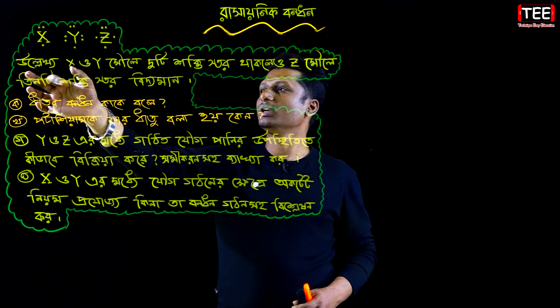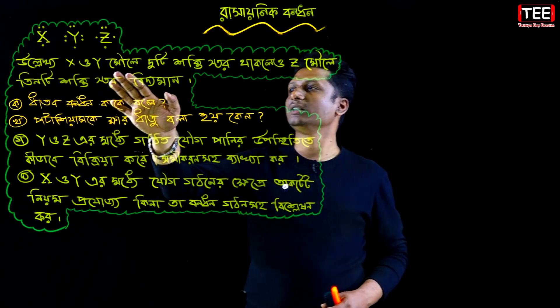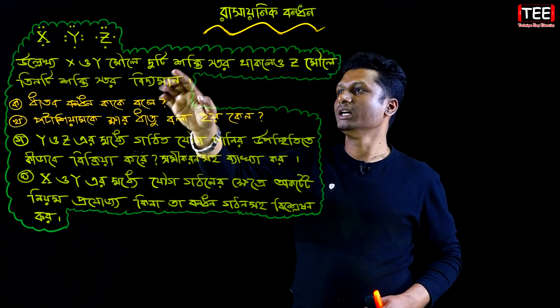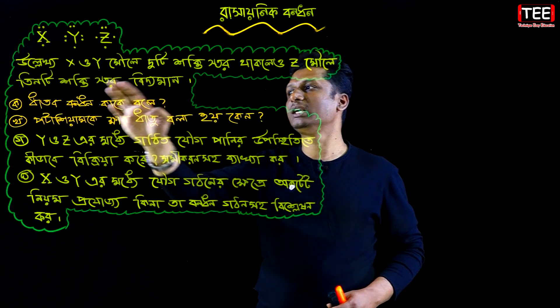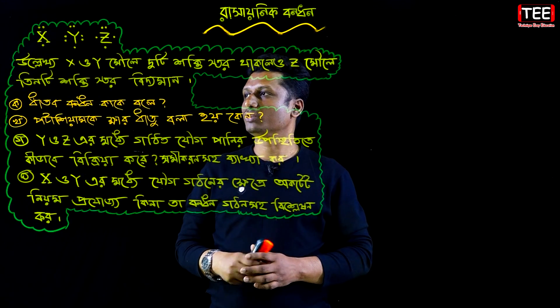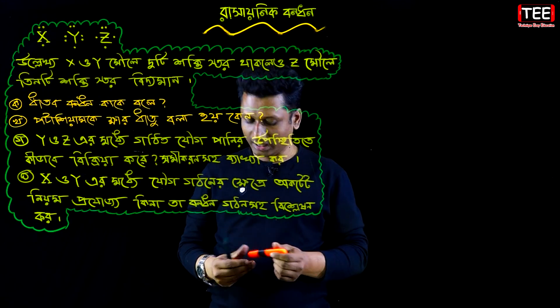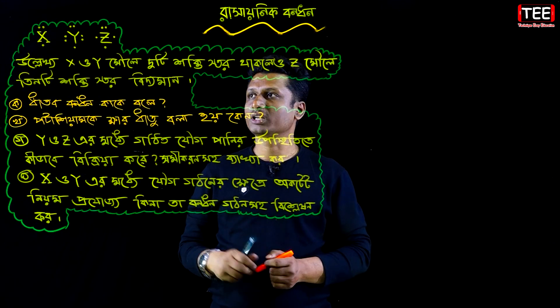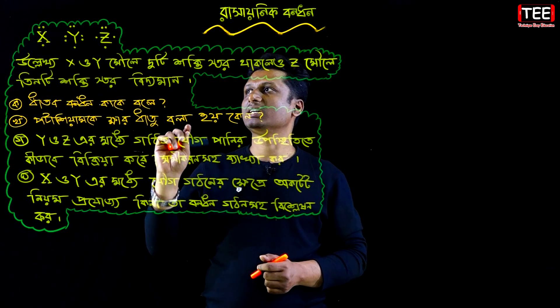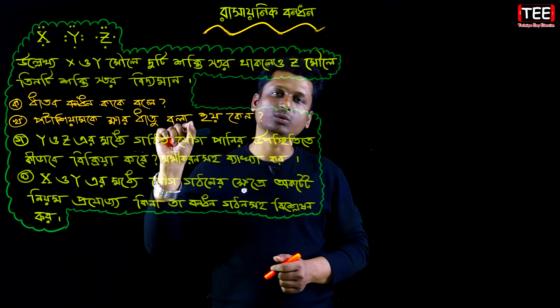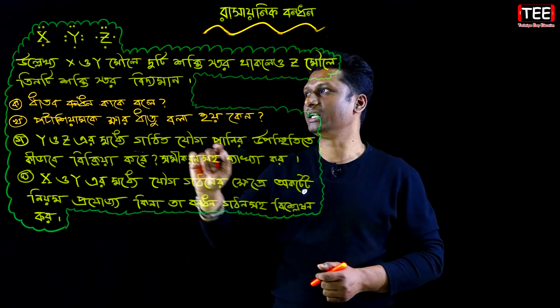So let's see: x and y mole — the 2-shell structure versus the 3-shell structure. First of all, we will find out which mole is the key — whether it is x, y, or z.